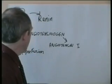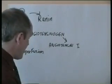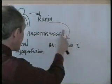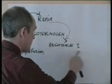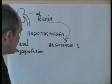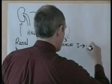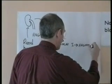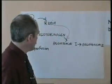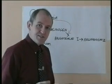Angiotensin is produced when angiotensinogen is acted on by renin. Renin facilitates the conversion of inactive angiotensinogen into angiotensin 1. Even angiotensin 1 is not that active a molecule. Angiotensin 1 can be converted into another molecule called angiotensin 2, angiotensin type 2.